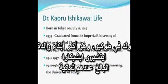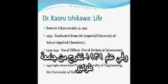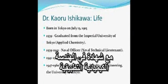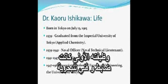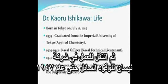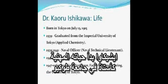Born in Tokyo, the oldest of the eight sons of Ichiro Ishikawa, in 1939 he graduated from the University of Tokyo with an engineering degree in applied chemistry. His first job was as a naval technical officer, then he moved on to work at the Nissan Liquid Fuel Company until 1947, before starting his career as an associate professor at the University of Tokyo.